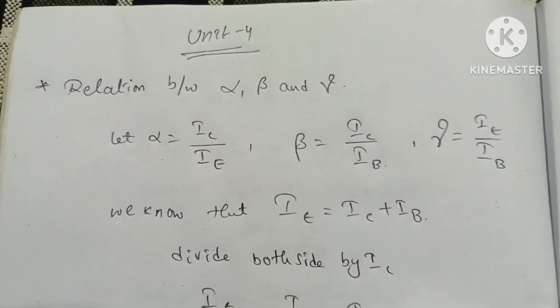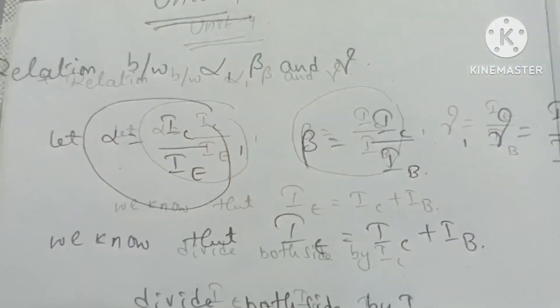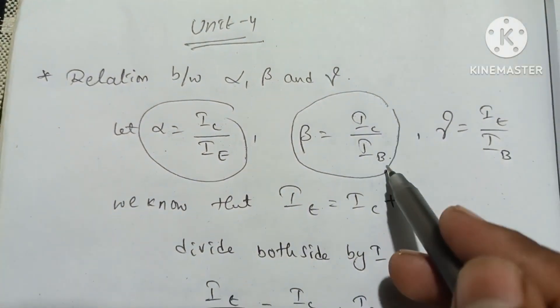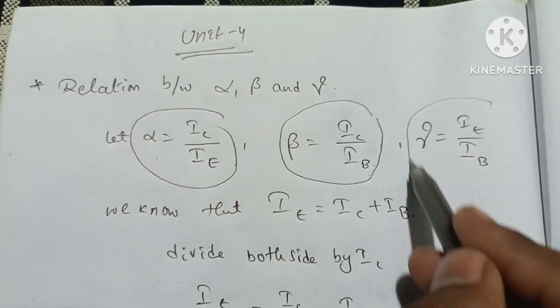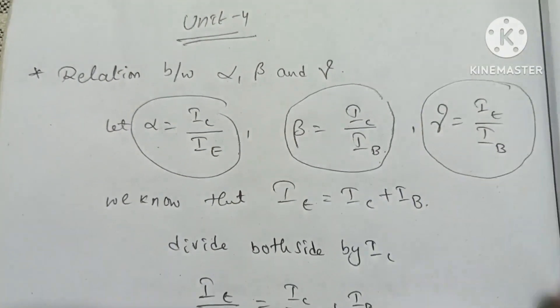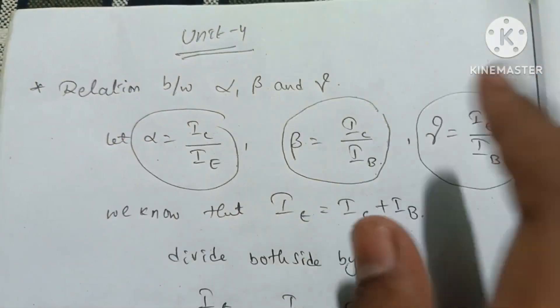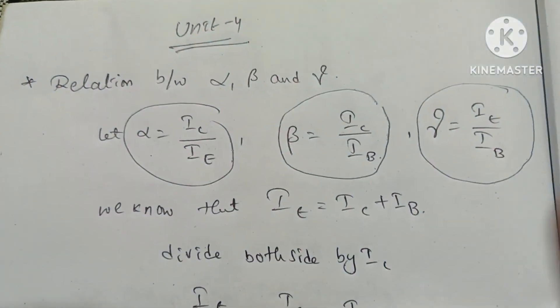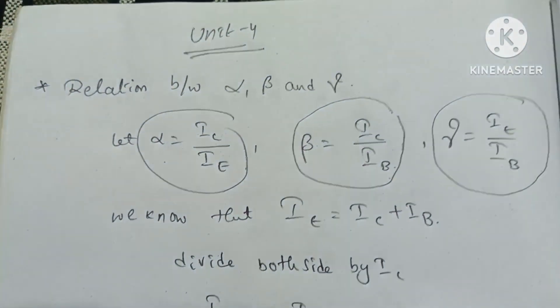Let alpha be equal to IC by IE, and beta be equal to IC by IB, and gamma be equal to IE by IB. These are the 3 values — alpha, beta, gamma.